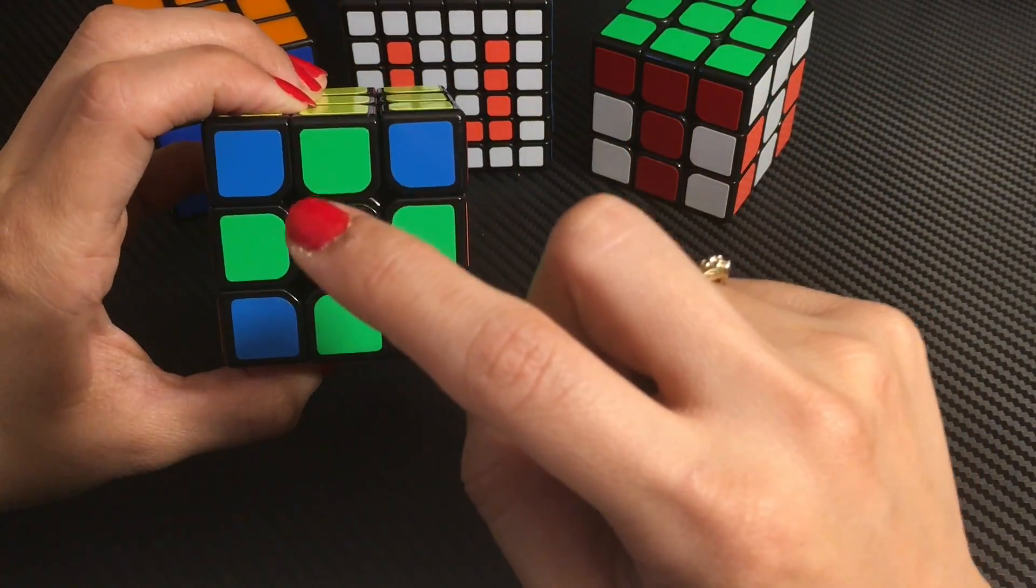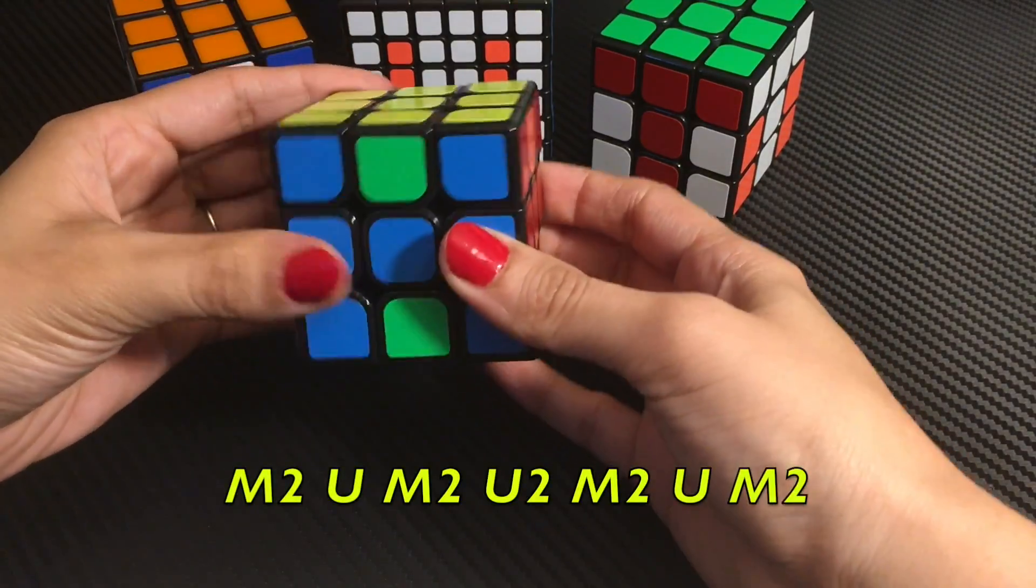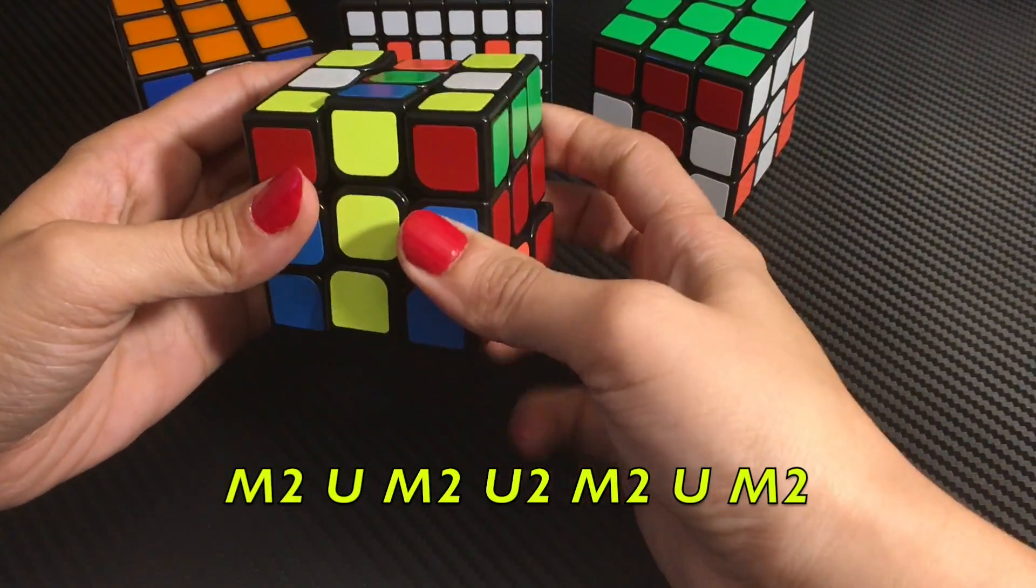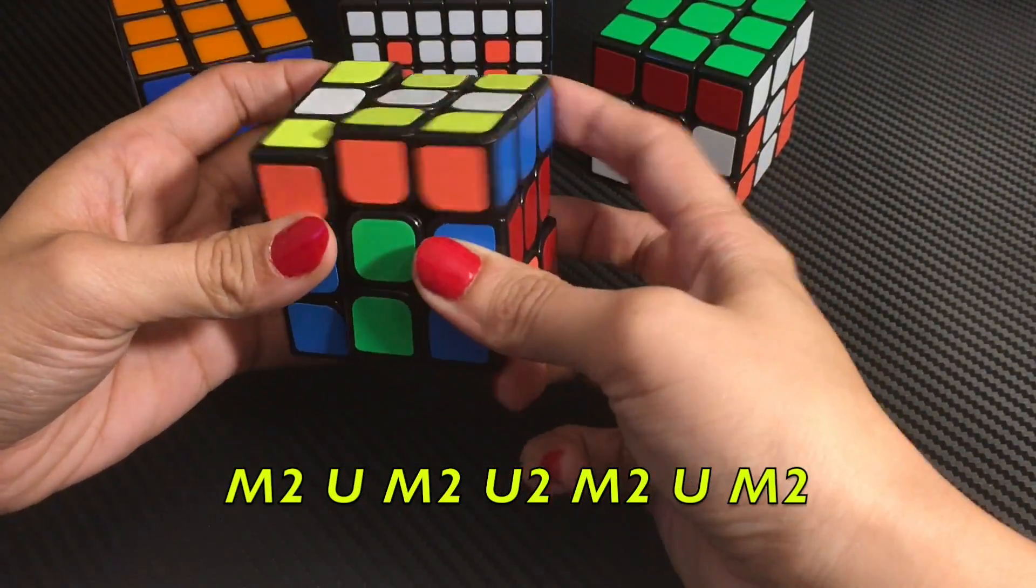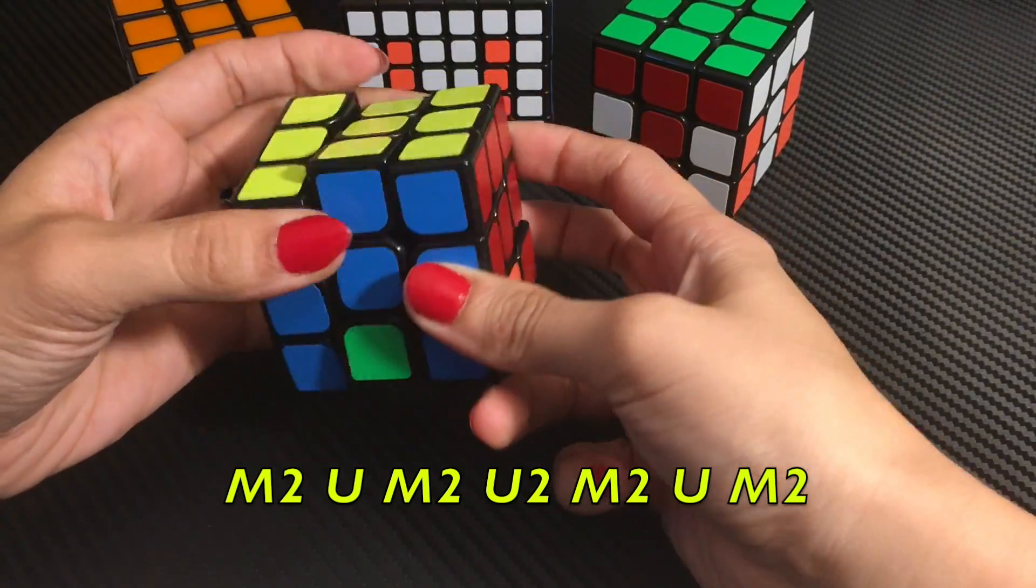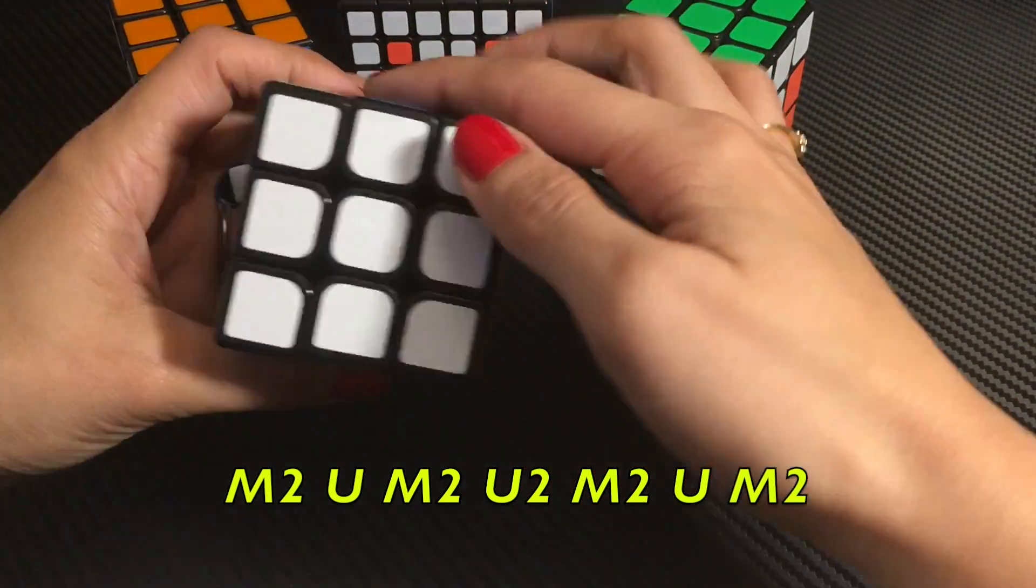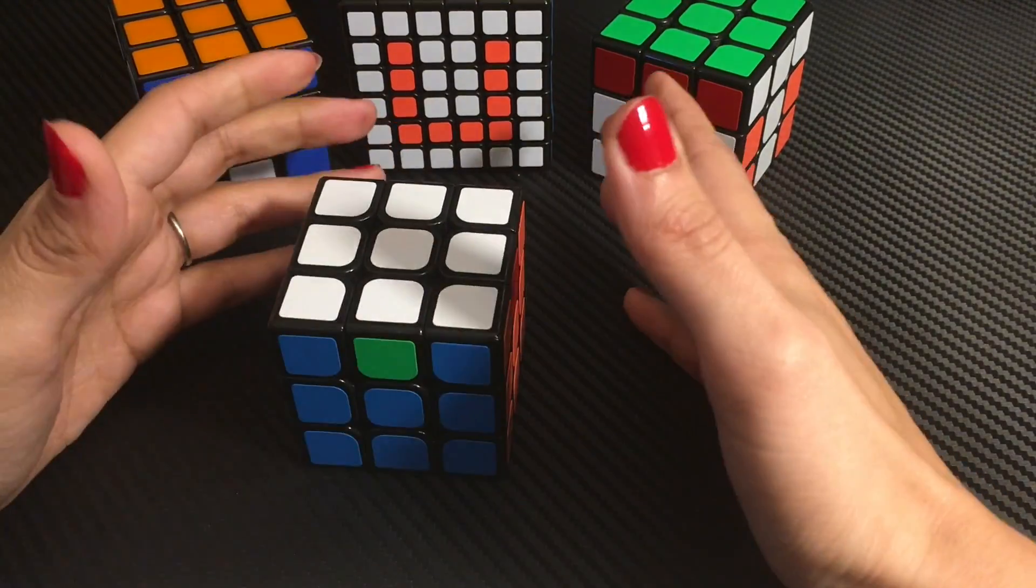So, now, we have to do the same thing again. M2, U, M2, U2, M2, U and last time M2. And these are our edges. Now, you can click again. Alright?